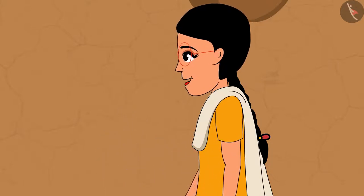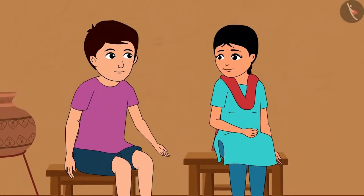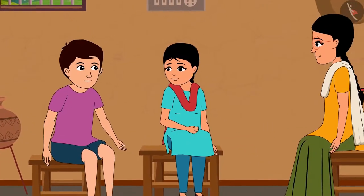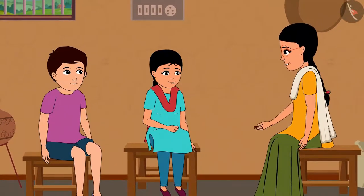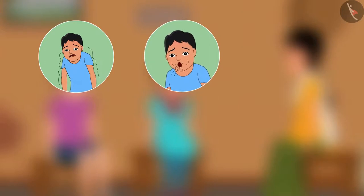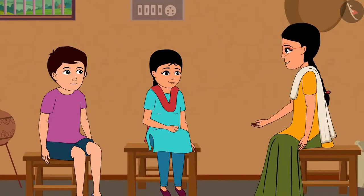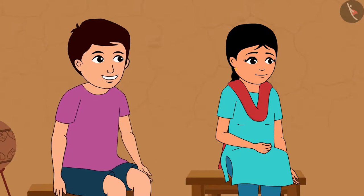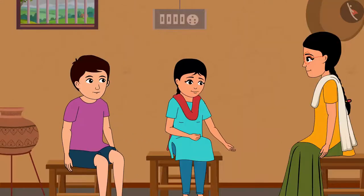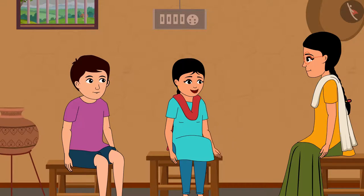Anemia also has symptoms: tiredness, weakness, breathlessness, dizziness, swelling of the tongue and paleness of the skin. To prevent anemia, eat plenty of green leafy vegetables, gooseberry and jaggery, which contain iron and help maintain good hemoglobin levels. It is essential to eat these foods in good quantities to keep the body healthy. Let us share this information with our parents, and tomorrow at school we will talk to everyone about malaria and anemia, their symptoms and ways to prevent them, to spread awareness.